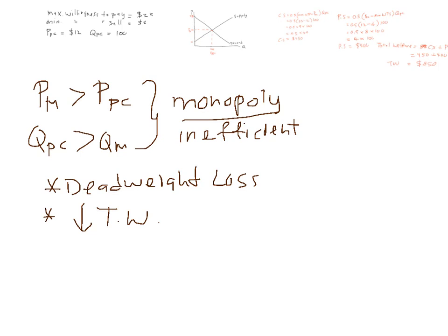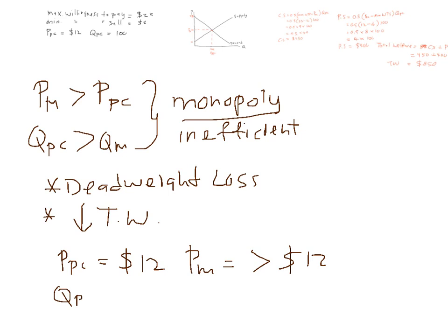We can show this. The new equilibrium will be different — the old equilibrium price was $12, but the new monopoly price will be greater than $12. The competitive outcome for quantity was 100 units, and under monopoly it will be less than 100 units.